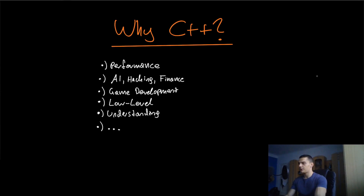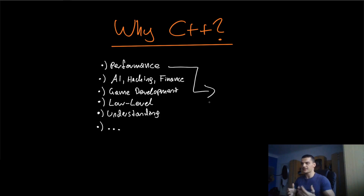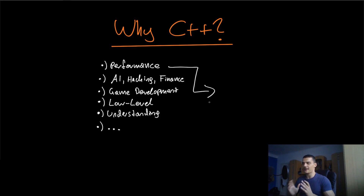Next, let's talk about why C++ is a good language to learn and why Python, Java, or C# are not always enough. The number one reason is performance. C++ is a super-fast language. This doesn't mean every C++ program is necessarily faster than C# code, but C++ has the potential — if you optimize and write good code — to be faster than C#. If you write good code in C++ you can achieve very high performance.